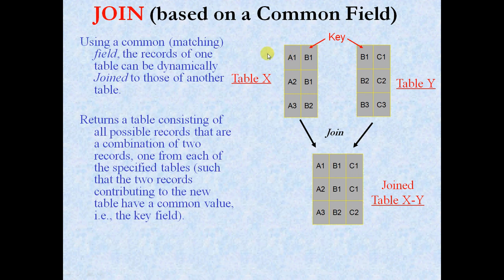When the join is made, the computer is going to go row by row through the source table and make matches across the key field.